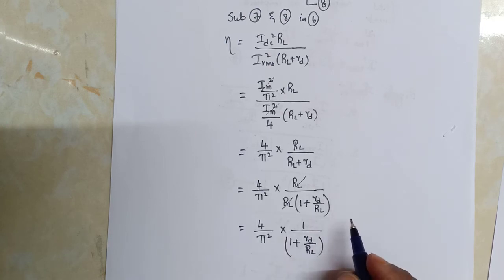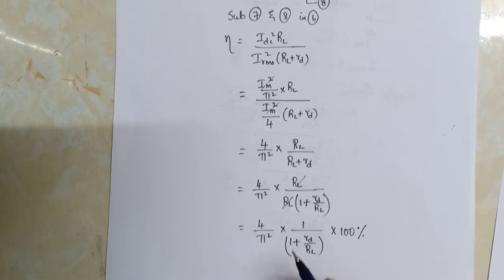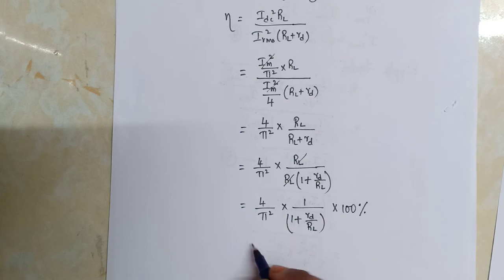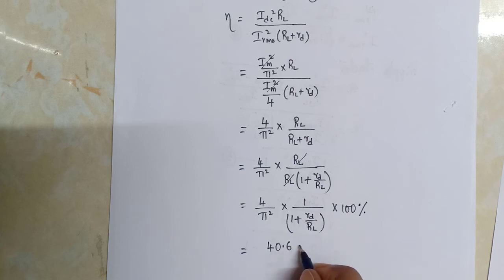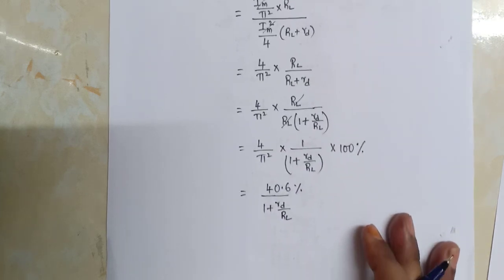Rectification efficiency is always calculated in percentage, so we write × 100%. We get 40.6%. If I calculate 4/π² × 100, we get 40.6% divided by 1 + Rd/RL as it is.